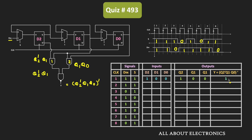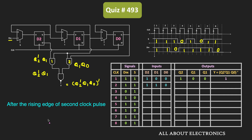Now let us see what happens during the second clock pulse. S input is equal to 1 again, so the input to D2 flip-flop is equal to DIN. During the second clock pulse, DIN is also equal to 1, so D2 input is equal to 1. Since S is equal to 1, for D1 and D0, the output of the previous stage is applied as input — Q2 goes to D1, and Q1 goes to D0. That means during the second clock pulse, D2, D1 and D0 inputs are 1, 1, 0. Just after the second clock pulse, outputs Q2, Q1 and Q0 are also 1, 1, 0, and based on these outputs, Y will remain 1.